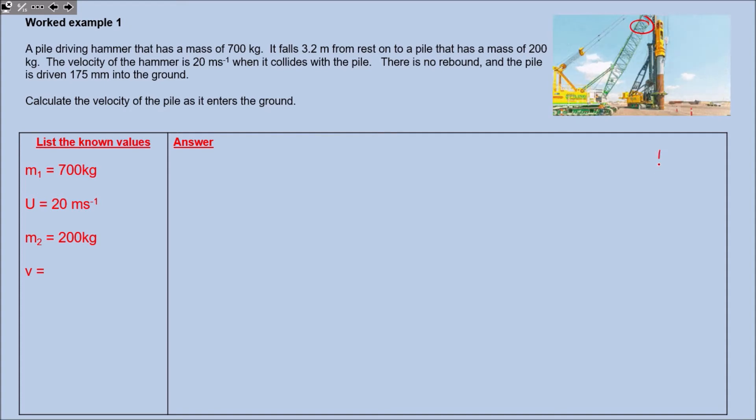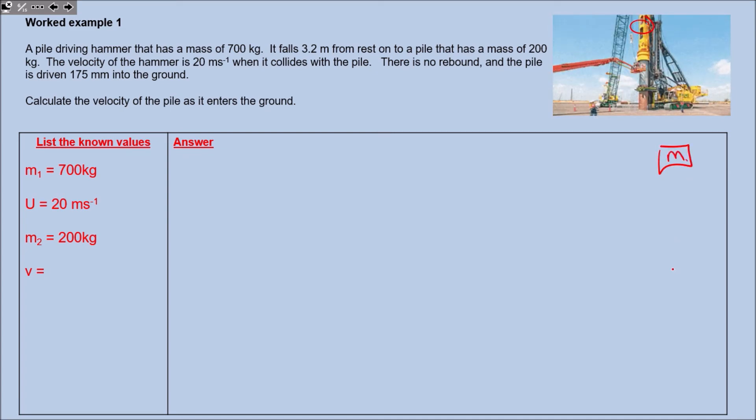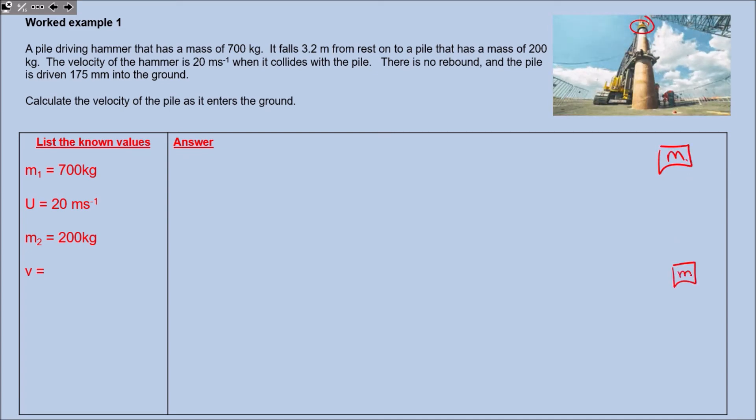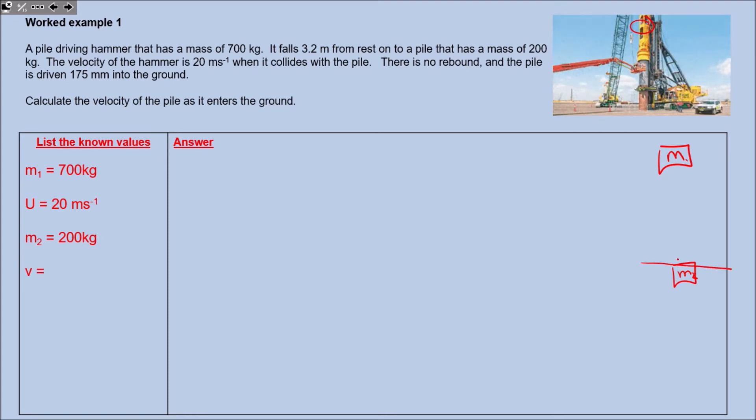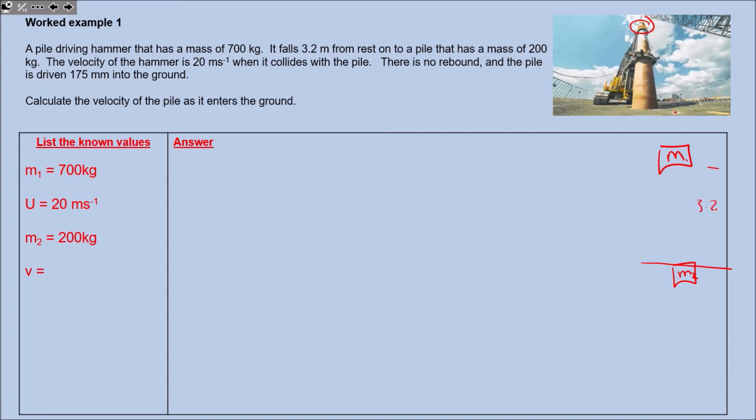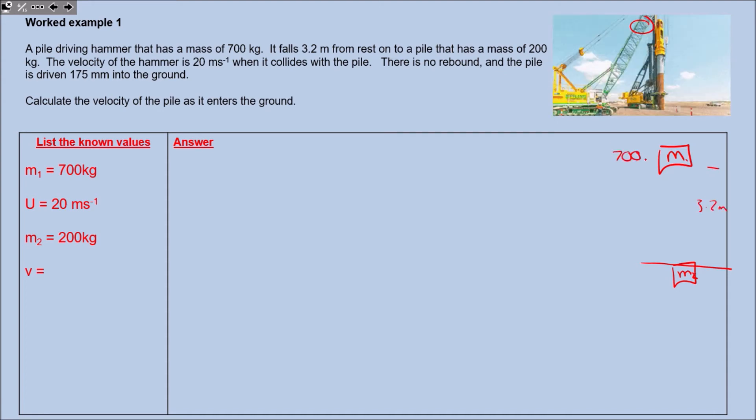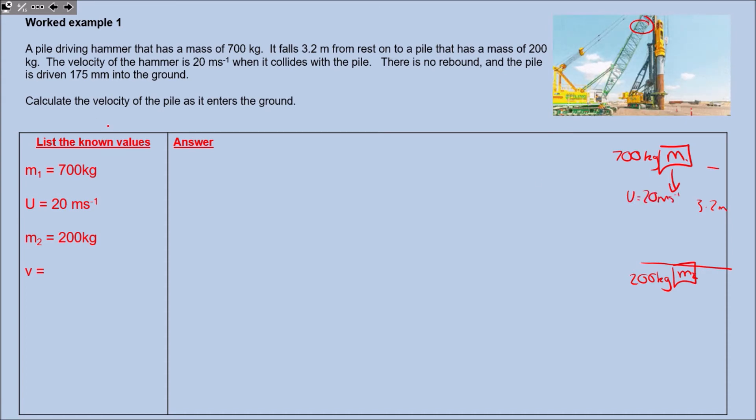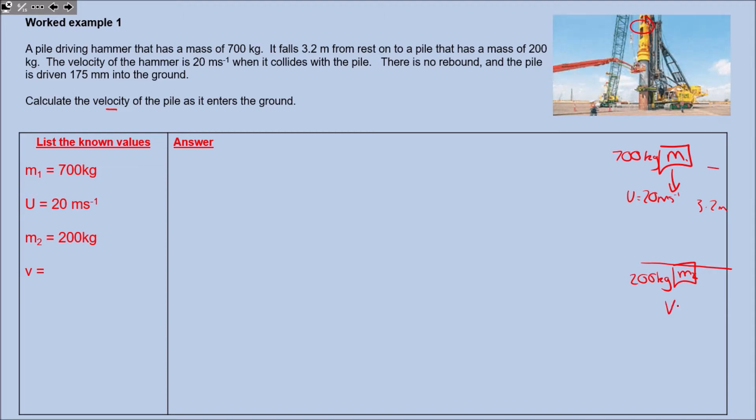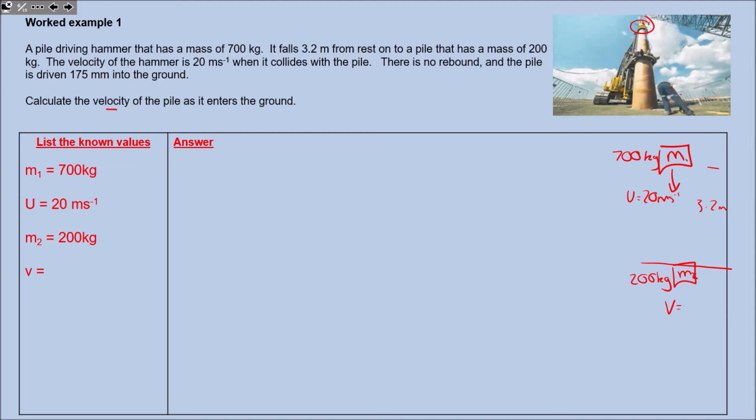There's a big hammer inside here. That hammer hits that steel post and drives it into the ground. Imagine you've got a big hammer - that's mass 1 - coming down hitting another object - that's mass 2. At the beginning I've got one mass, at the end I've got two masses. I'll annotate this. I've got a height of 3.2 meters, 700 kilograms as that mass, and 200 kilograms as that mass. When this object has fallen, it's got a velocity of 20 meters per second. This question is asking us to calculate the velocity of this object.